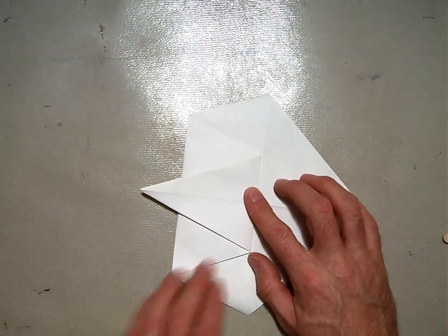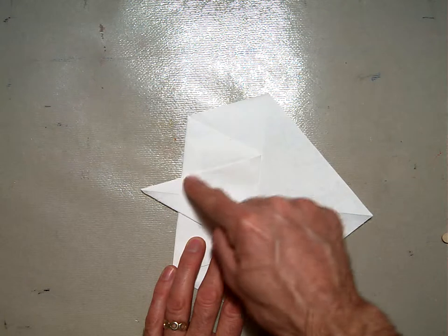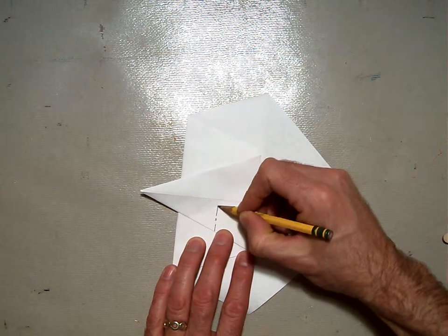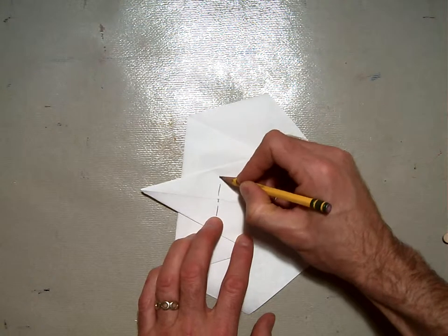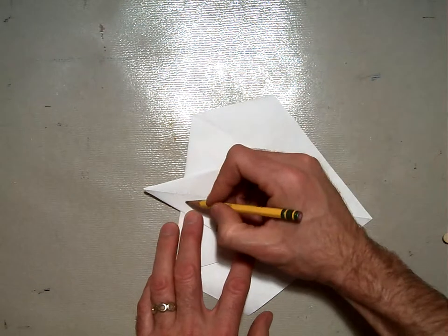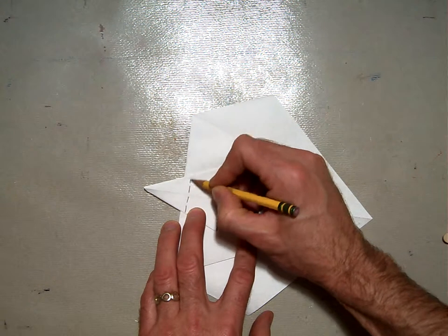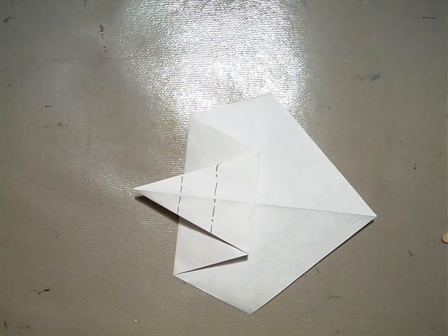Now we're going to pleat fold the bill area here. So I'm actually going to put a mountain fold here. And then I'm going to put a valley fold right here. And that's going to give us the beak standing out.